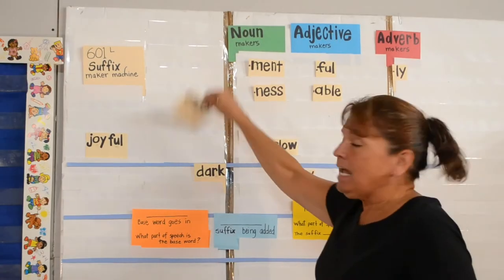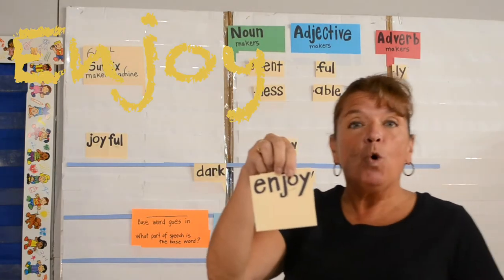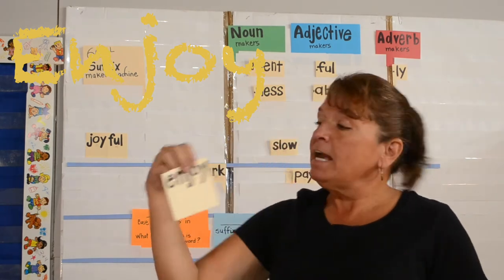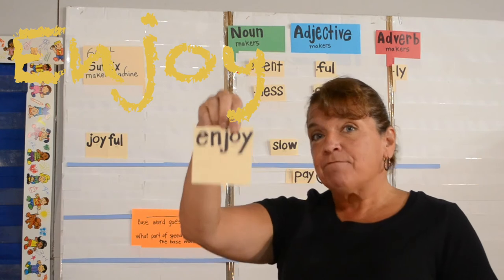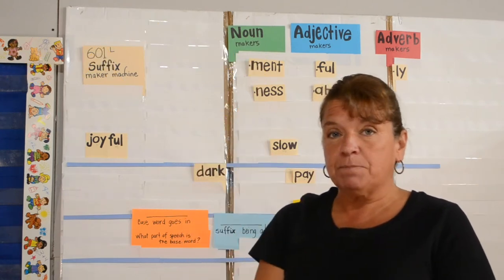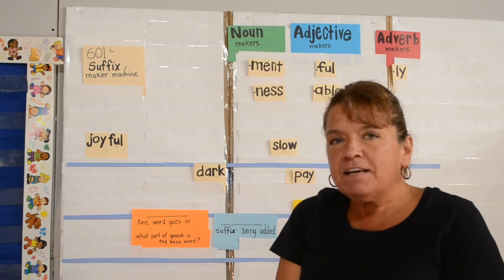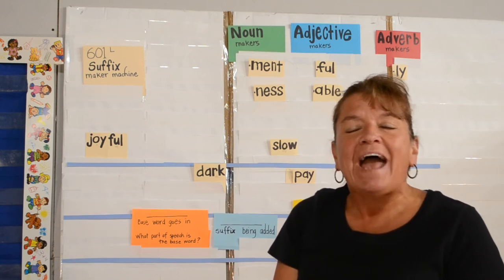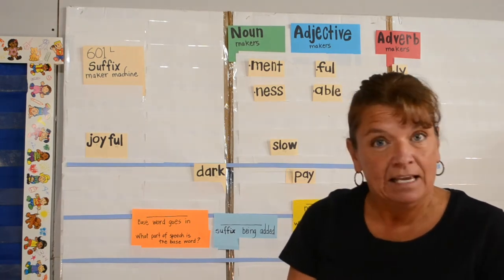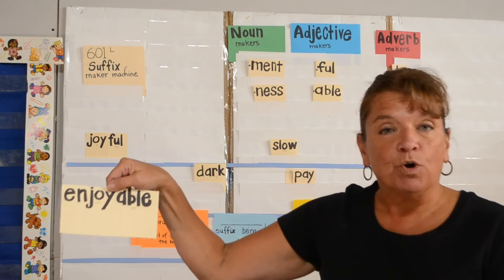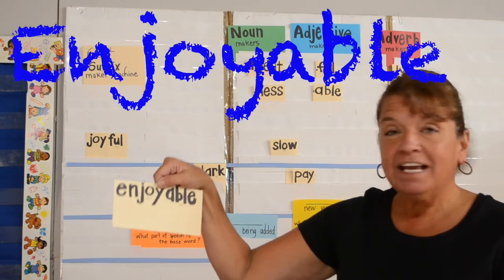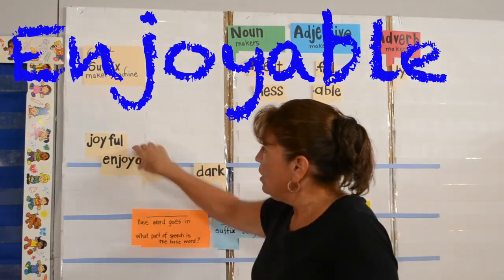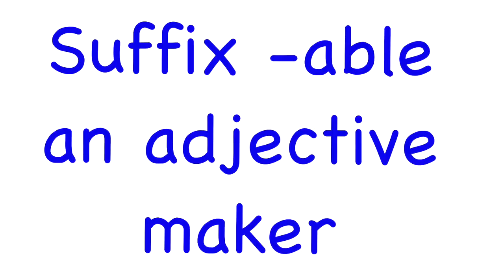Now we're going to take the base word enjoy. Enjoy is a verb. We're going to take that verb enjoy and put it into the suffix maker machine. In the suffix maker machine, we're going to add the suffix A-B-L-E. Out comes the word enjoyable — now this word is an adjective. So the suffix A-B-L-E is also an adjective maker.